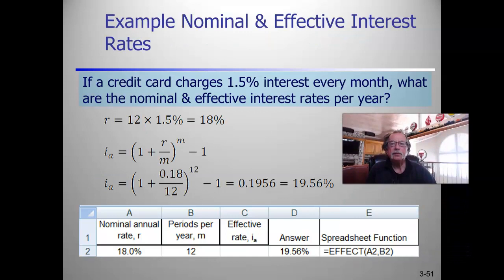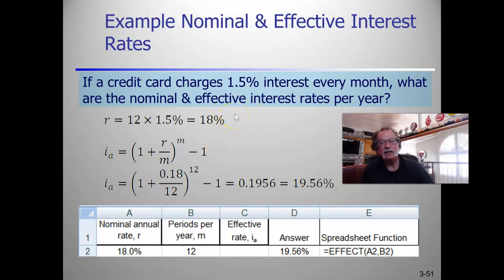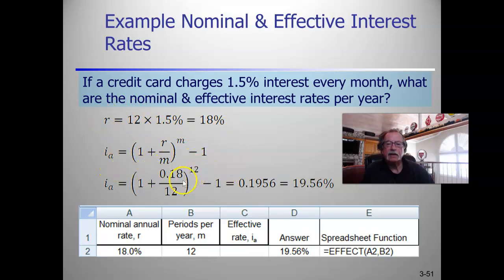This example shows 1.5% interest per month and the nominal and effective interest rates per year. The nominal rate is the annual rate without taking compounding into account, so it's simply 12 times 1.5% equals 18%. The effective rate is calculated with the formula and also verified with the spreadsheet EFFECT function.